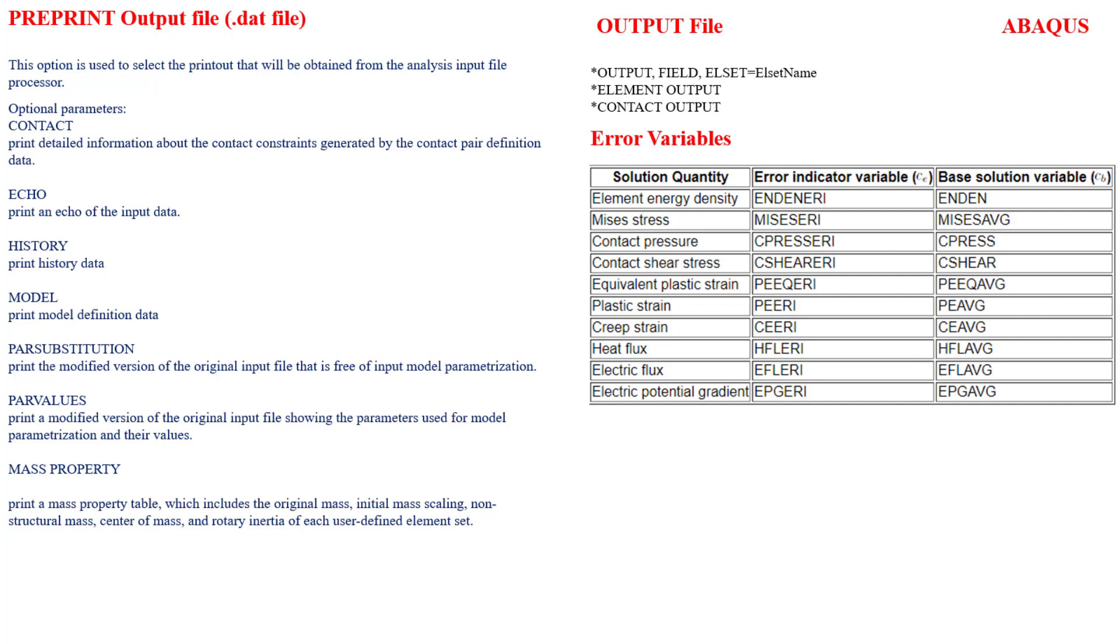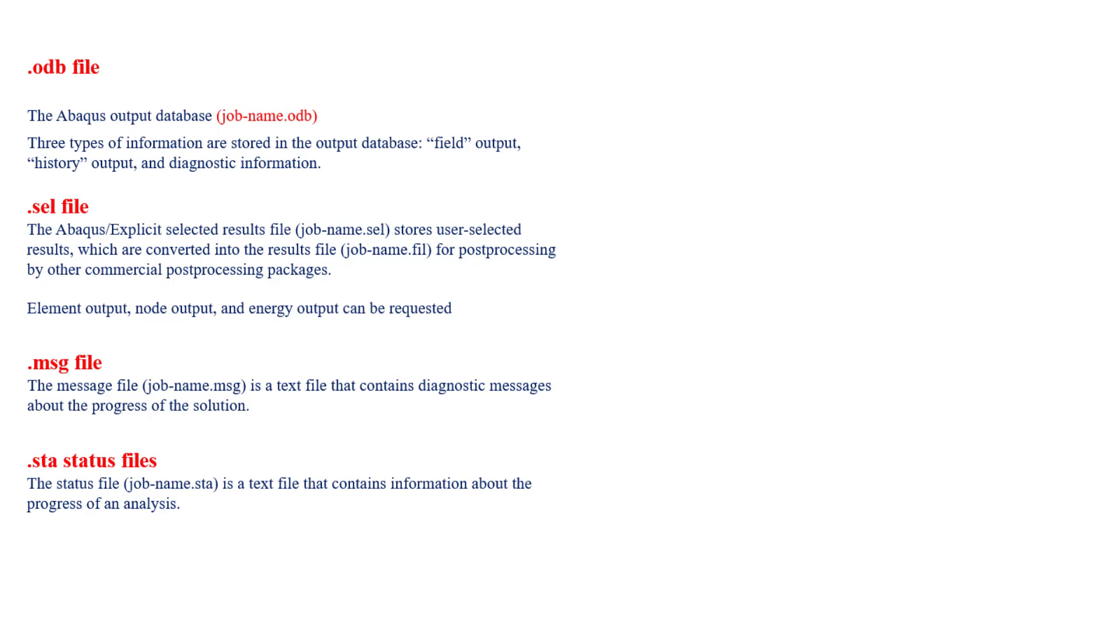The first thing is the print output file, the .dat file. From that particular file, you'll get the contact echo, history, model, mass properties, parameters - each and every detail you'll get here. What other things I've mentioned here: in this output file, you'll have details for element outputs and contact outputs. You can even check the error variables.